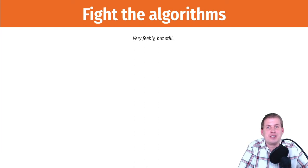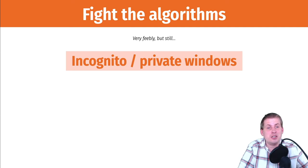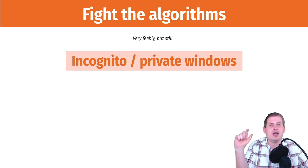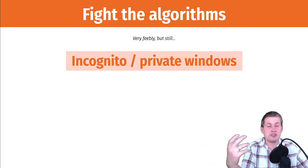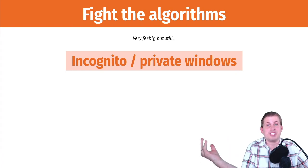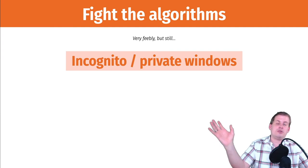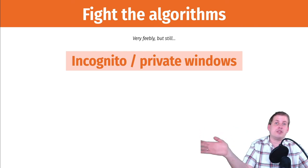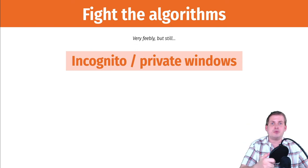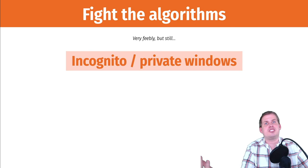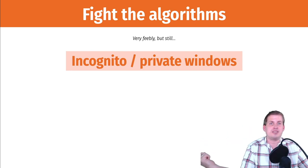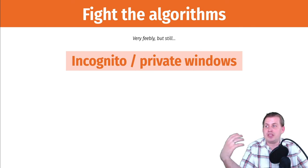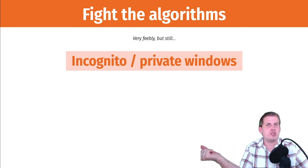There are a few things you can do personally to push back against tracking algorithms. Using an incognito or private browser window prevents cookies from tracking you across sites. Without cookies, if you search for a book on Amazon, Facebook won't be able to serve you that ad later. You've probably noticed this when comparison shopping — search for a blender and you'll see blender ads on Google, Facebook, Instagram, and Amazon for weeks because they all buy and sell data behind the scenes.